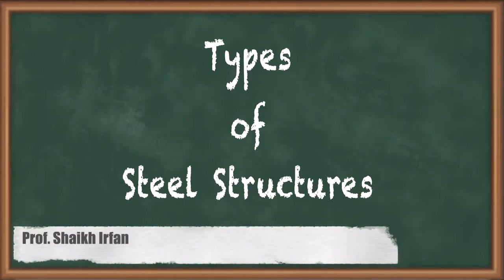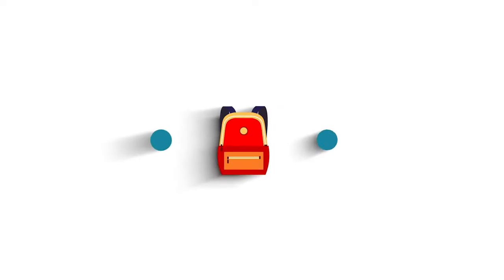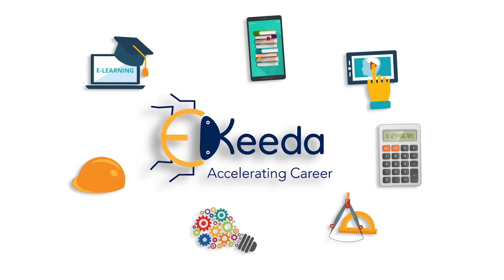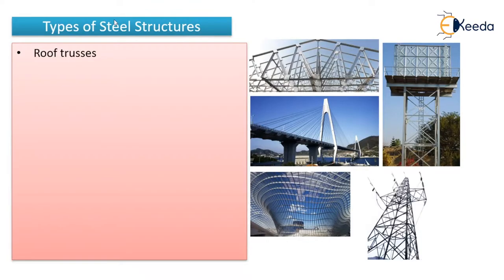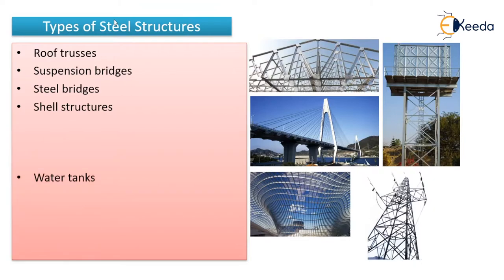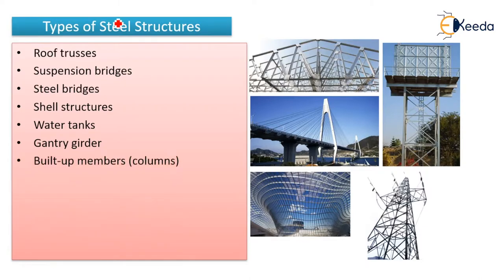Hello everyone. In this video, we are going to see types of steel structures. The first one is roof trusses, then we have suspension bridges, steel bridges, shell structures, water tanks, gantry girders, built-up members which are columns generally, and lastly building frames. So all these are the types of steel structures.